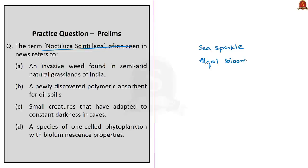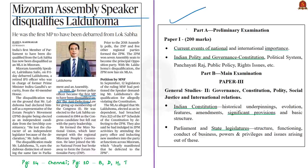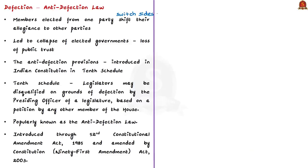Now let's move on to the next news article. The Speaker of Mizoram Legislative Assembly has disqualified Nalduhoma, a member of the Mizoram Assembly. Interestingly, Nalduhoma was also the first member of Parliament to have been disqualified from Lok Sabha under the anti-defection law of the 10th Schedule of the Constitution in the year 1988.